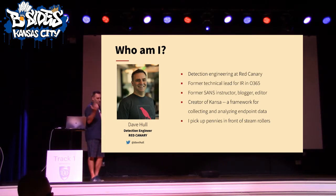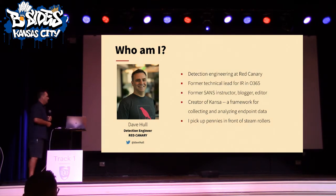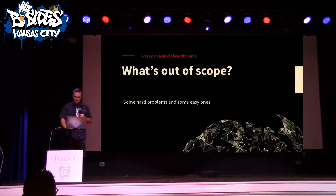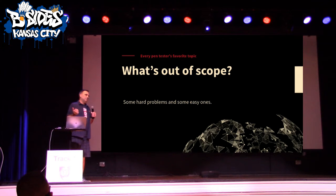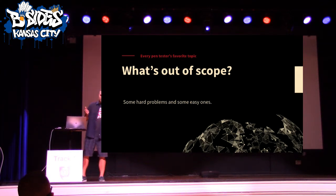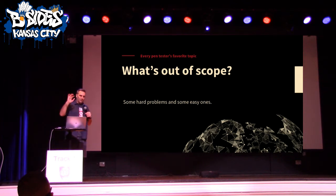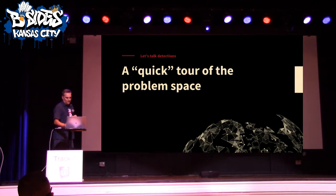A little bit about me — I do detection engineering at Red Canary, trying to make it easier to catch bad things more efficiently. There are some things out of scope for this talk: if you've got 50,000 endpoints, you have a hard problem of just centralizing all the interesting security telemetry and doing analysis on it — that's largely a solved problem in lots of environments and is out of scope. We're not going to talk about easy detections; we're going to talk about hard detections.